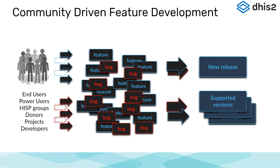JIRA is useful to the overall DHIS2 development team, but also allows for the community to monitor progress on upcoming features, report bugs, and suggest new features directly to the developers.